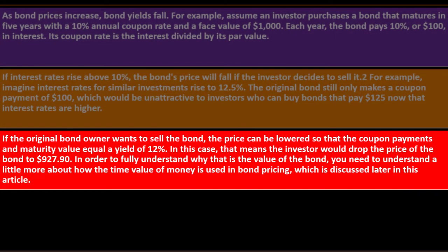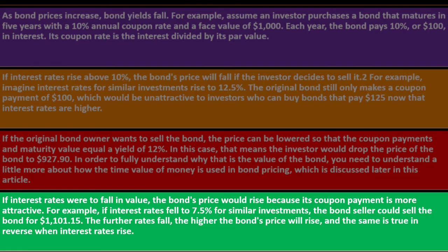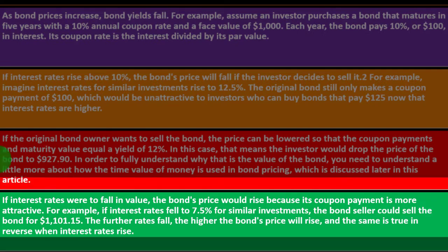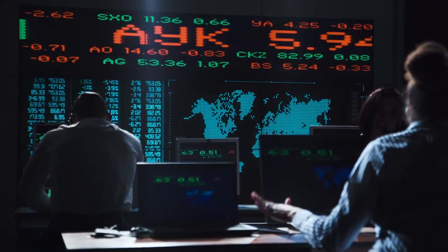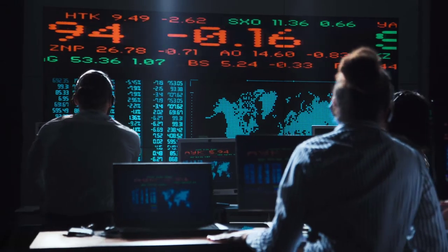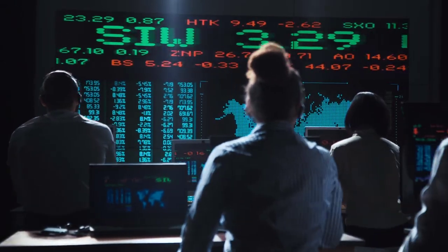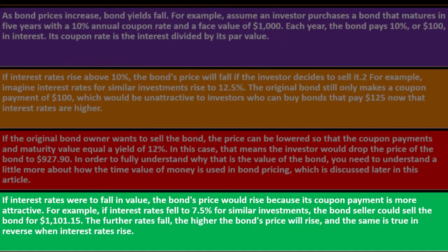To fully understand why the bond is valued at $927.90, you need to understand how time value of money is used in bond pricing. Conversely, if interest rates fall, the bond's price rises because its coupon payment becomes more attractive. For example, if interest rates fall to 7.5% on the market for similar investments, the bond's seller could sell the bond for $1,101.15.